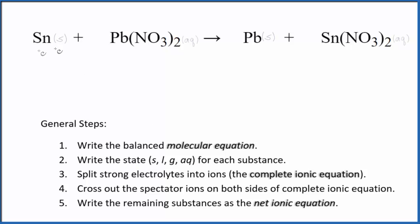That looks like this: tin by itself, like lead, they're just solid - those are metals. For nitrates, nitrates are very soluble, so both of these substances will be aqueous. They'll be dissolved in water.